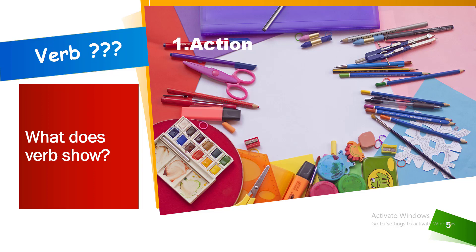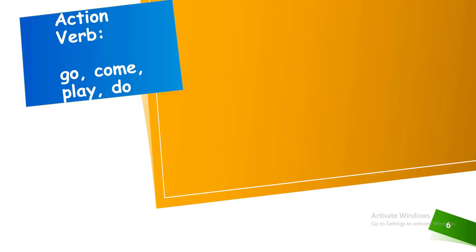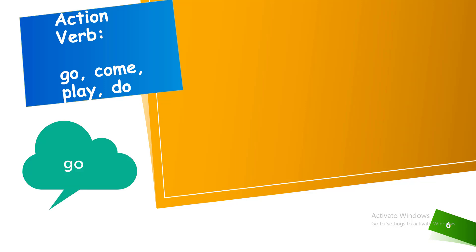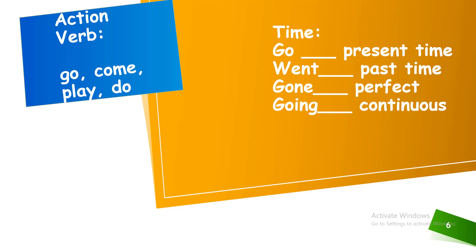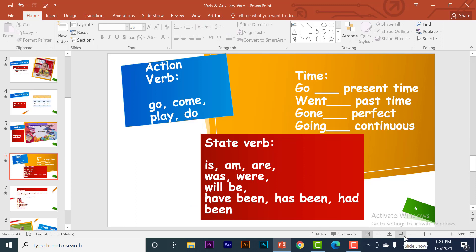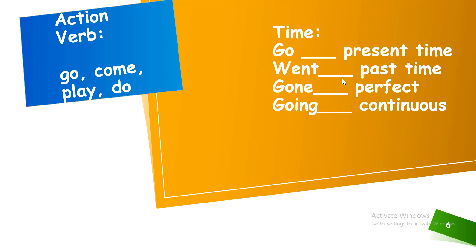What does a verb show? It shows an action, a state, and time. Action verbs include: Go, Come, Play, Do. We also understand tense with the help of verb. Go is used in the present time; Went is used in the past time; Gone is used in the perfect tense in any time — present, past, or future; and Going is used in the continuous form of tense.